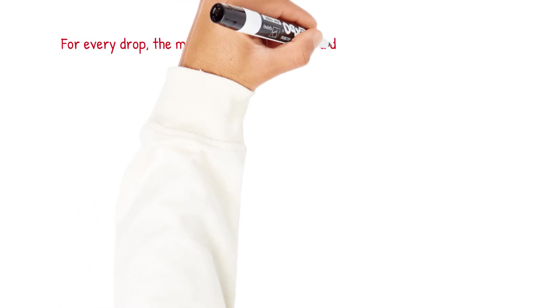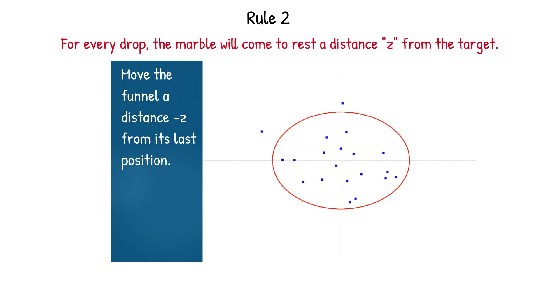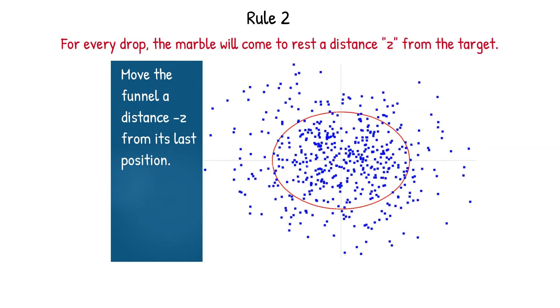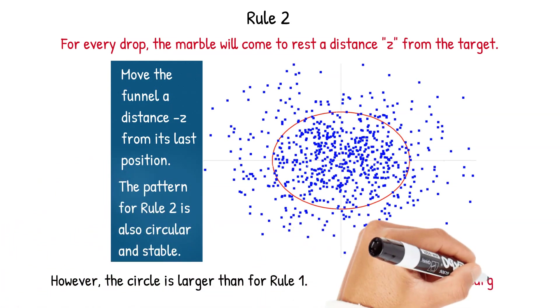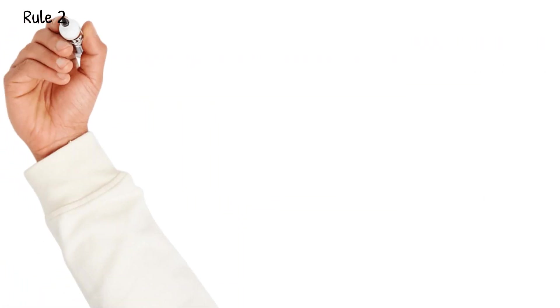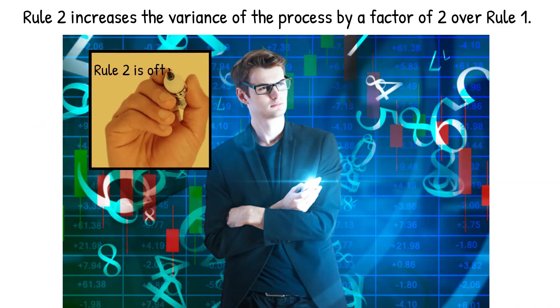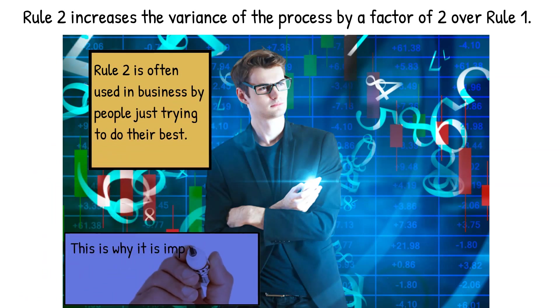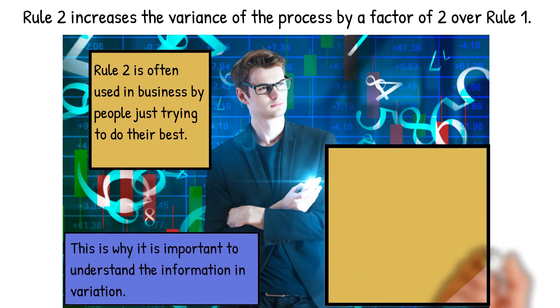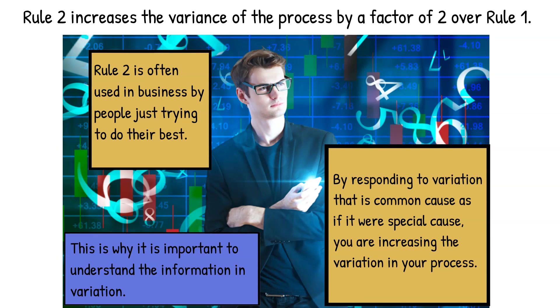For every drop the marble is going to come to rest at a distance z from the target, so you're going to move the funnel a distance minus z from its last position. And here's the Excel simulation showing it and you can see it's also a circular pattern like rule one and it is stable. The difference is though that the circle for rule two is 41 percent larger than the circle for rule one. So rule two increases the variance of the process by a factor of two over rule one. And rule two is what we typically use in business by people trying to do their best. This is why it's so important to understand the information that's in variation. By responding to variation that is common cause as if it were special cause you are increasing the variation in your process.